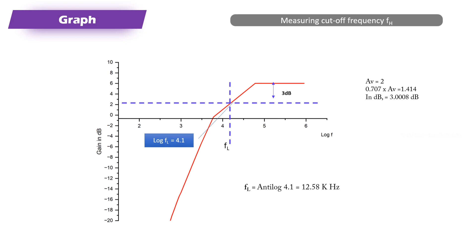The lower cutoff frequency obtained from the graph is 12.58 kHz. We designed for 10 kHz, but due to component tolerances, line fluctuations, and measurement variation, there is a difference. This variation is normal when using non-ideal components and measurement devices.